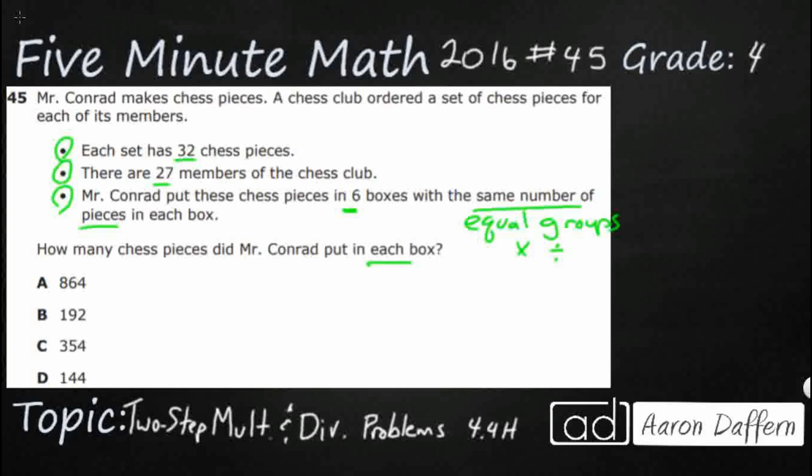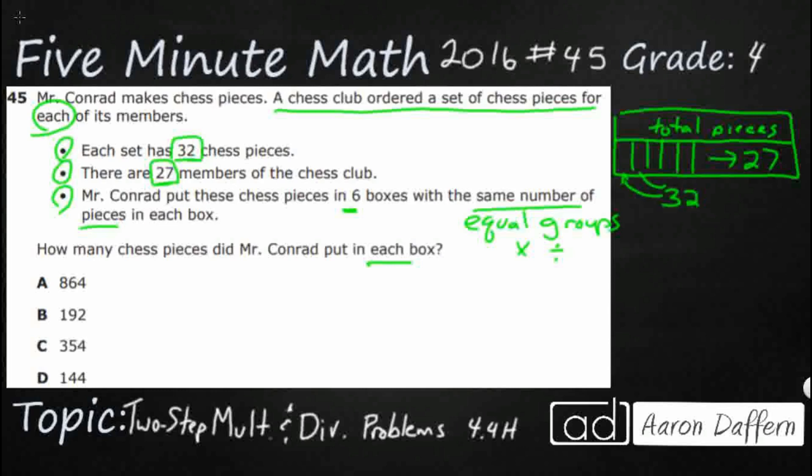Well, let's go back up here to see a chess club ordered a set of chess pieces for each of its members. So there are 27 members, and each of them get a 32-piece chess set. And so we can look at it like a strip diagram. This is going to be my total pieces. I've got 27 members, so I could just split this into 27 pieces. Inside each of those 27 people, they're going to receive a 32-piece chess set. So I'm going to skip count by 32 27 times. But the easiest way to do it would be simply to multiply these two. 32 times 27.